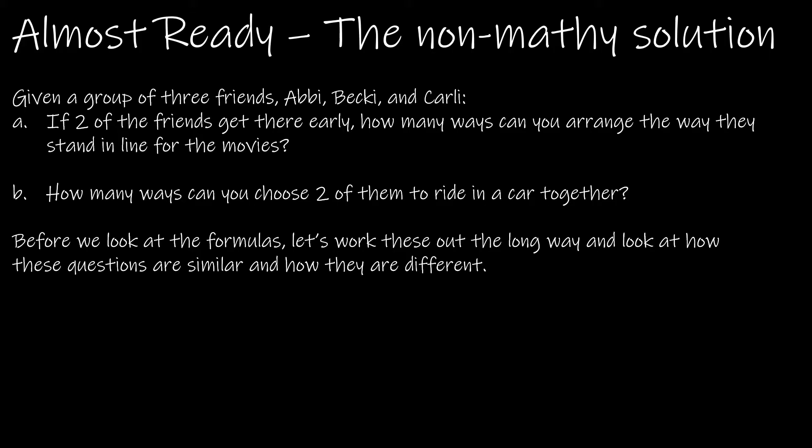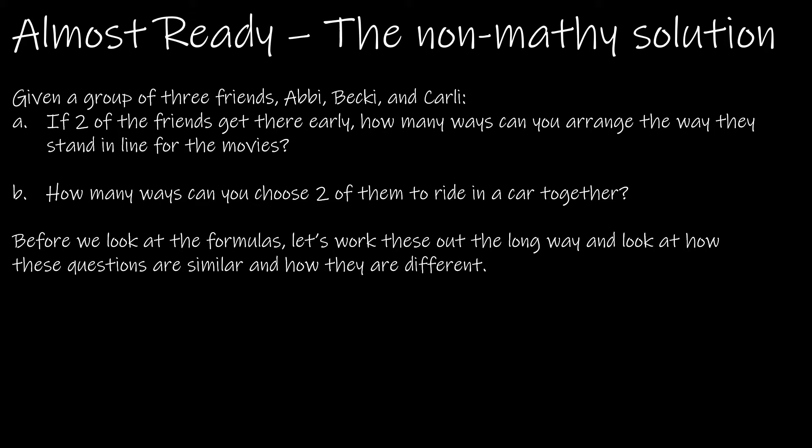Now let's look at a question using permutations and combinations conceptually first, so you really understand the concept. There are three friends — Abby, Becky, Carly. If two of them get there early, how many ways can you arrange the way they stand in line for the movies? We can have Abby then Becky, or Becky then Abby; Abby then Carly, or Carly then Abby; Becky then Carly, or Carly then Becky. Order matters because whoever's in front is different. There are six ways.